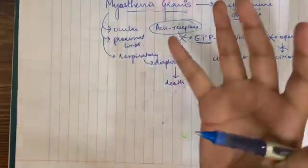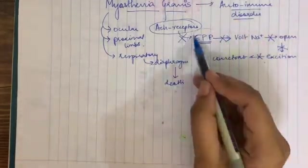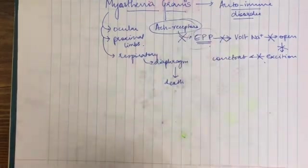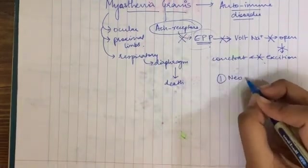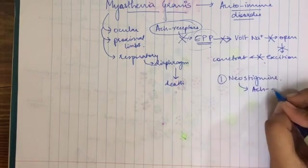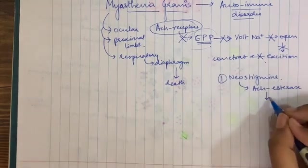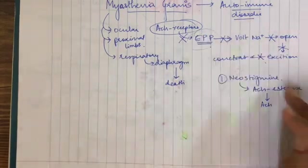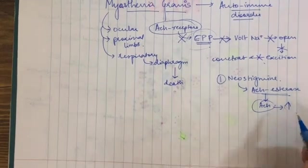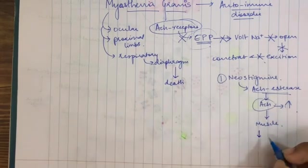How do we counter this disease? Going back to the root of the problem — the absence of enough end plate potential, due to absence of acetylcholine receptors. There are certain drugs known as neostigmine. These drugs inhibit acetylcholinesterase. Remember, acetylcholinesterase destroys the acetylcholine in the synaptic cleft. So when this is inhibited, acetylcholine concentration in the synaptic cleft increases, and hence muscle activity can still be sustained even with fewer receptors.